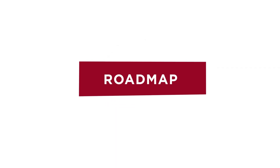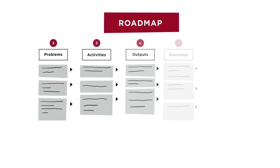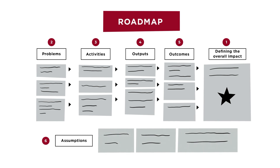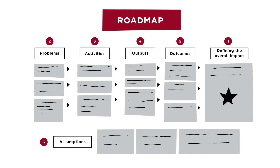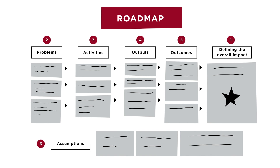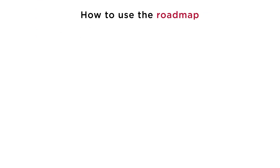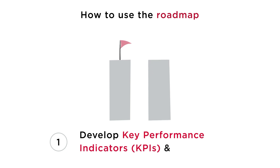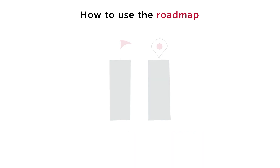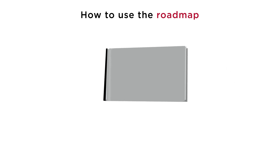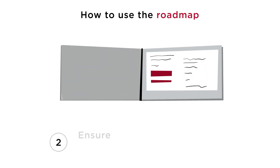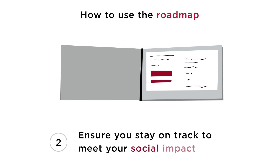Welcome to part 2 of our roadmapping tutorial. In part 1, we introduced you to the concept of a roadmap, explaining what it is and how you can build one for your organisation or project. You'll remember that a roadmap forms a key part of your application for funding. In this video, we'll explore how you can use your roadmap to develop key performance indicators and milestones. We'll also discuss how and when to go back to your roadmap if your project is funded to ensure you stay on track to meet your social impact goals. Let's get going.